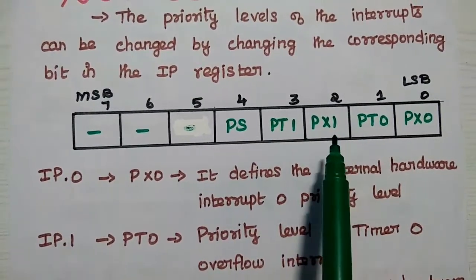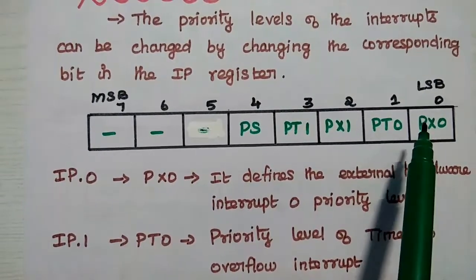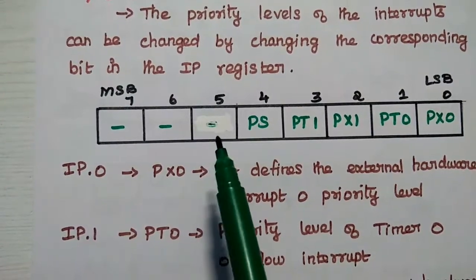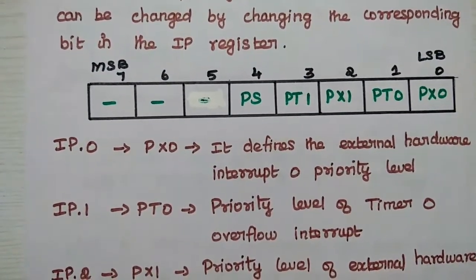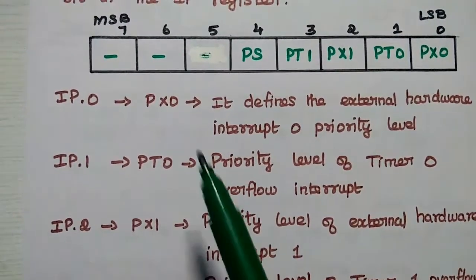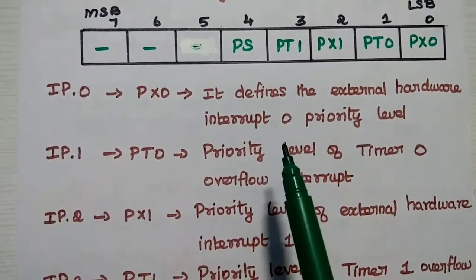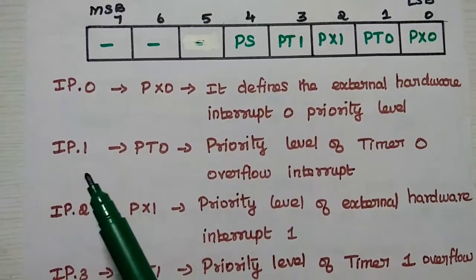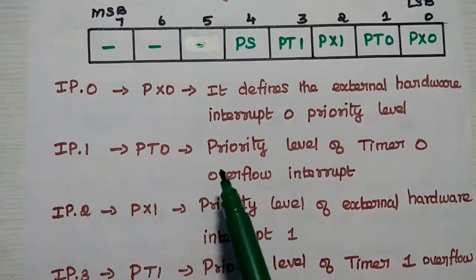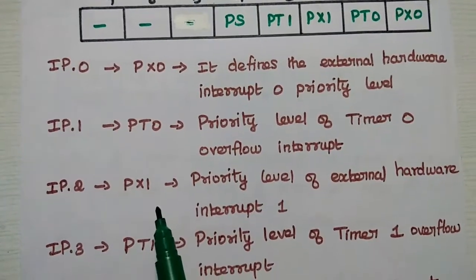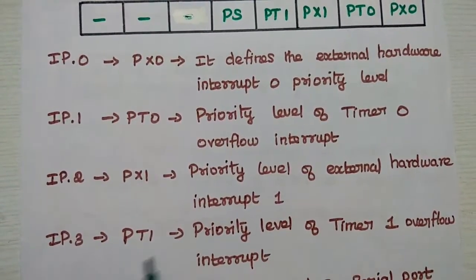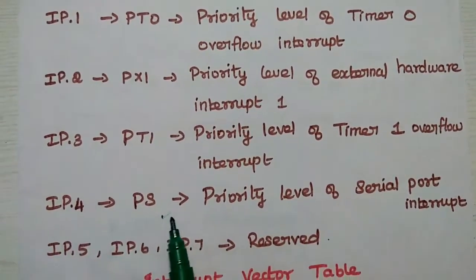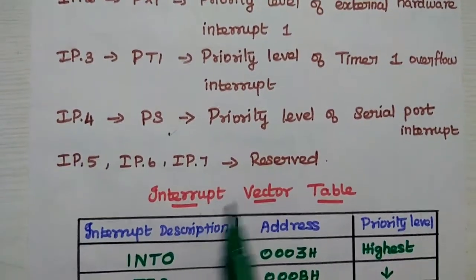The IP register is also bit addressable. The bit values from LSB are: PX0, PT0, PX1, PT1, PS. The remaining three bits are reserved for future use. IP.0, that is PX0, is used to define the external hardware interrupt 0 priority level — if it is 1, that interrupt has the highest priority. PT0 defines the priority level of timer 0 overflow interrupt. PX1 defines the priority level of external hardware interrupt 1. PT1 defines the priority level of timer 1 overflow interrupt. PS is the priority level of the serial port interrupt.